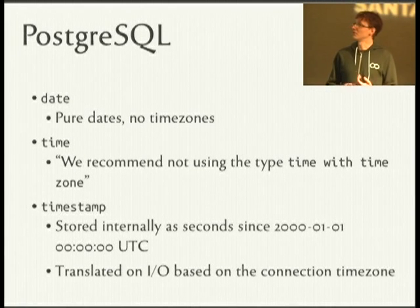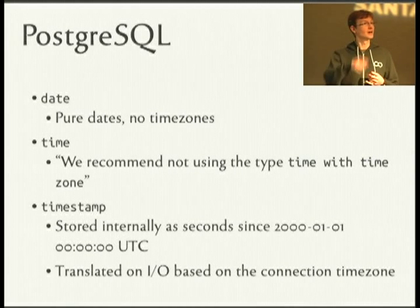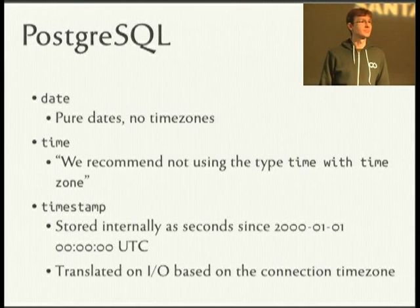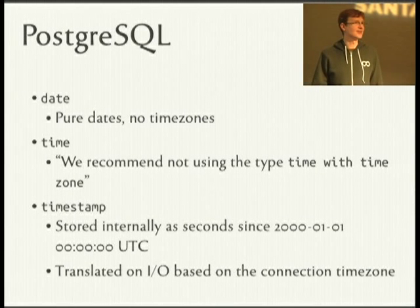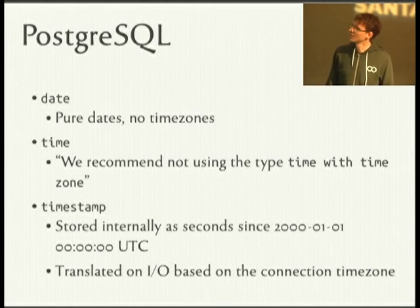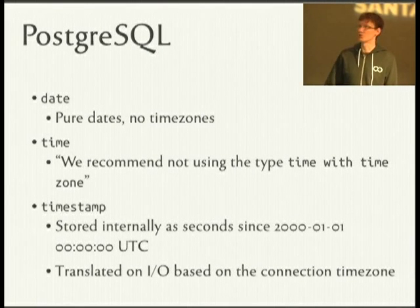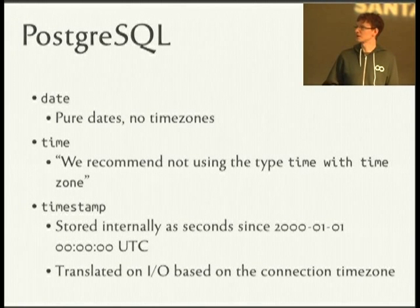Postgres has a similar set of functions, including a time type that can include a time zone — that's part of the SQL standard, believe it or not, except that it makes no sense. It doesn't make sense to have a time with a time zone without a date attached. For example, on both sides of the international date line, you can get a time that shifts and looks like it's one hour out when in fact it's a day plus or minus an hour. What you probably want is a timestamp, which is translated on I/O based on the connection time zone, so again, just set the connection time zone to UTC.